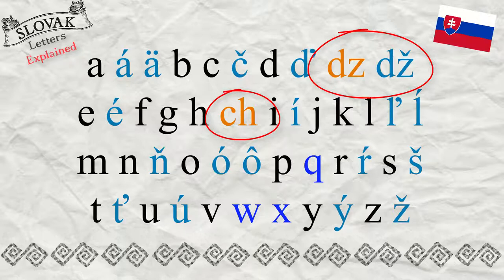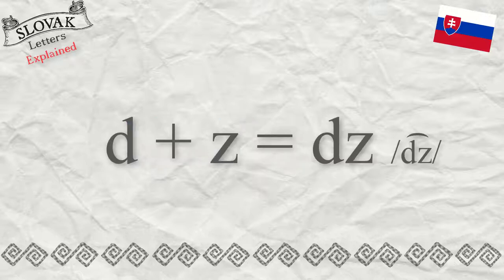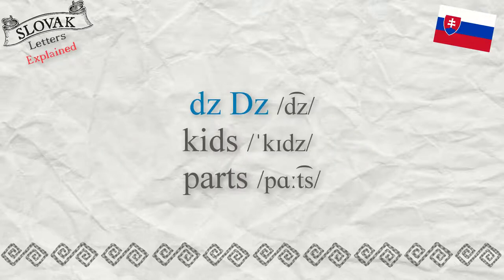They are considered as single characters in the Slovak alphabet. When pronouncing DZ, you just put the individual letters D and Z together and pronounce quickly: DZ. The sound is DZ as in the word 'kids,' and sometimes it sounds like C as in 'parts.'